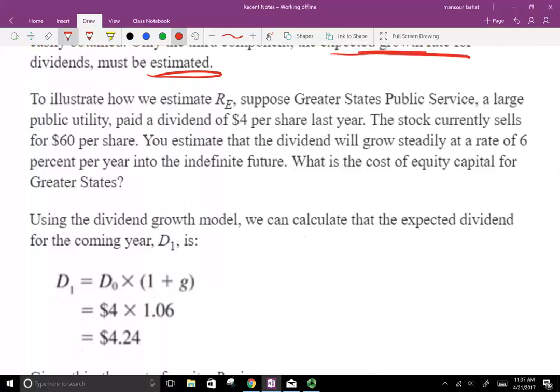Let's take a look at an example to see how this works. To estimate the return on equity, suppose Greater State Public Service, a large utility company, had just paid $4 in dividend. So the $4 in dividend they just paid, we call this D0. D0 equals $4. The stock currently sells for $60, so P0 equals $60. You estimate that the dividend will grow at a steady rate of 6%, and the growth rate of the dividend is 6%. We assume it's infinite into the future. What's the cost of equity of this business?